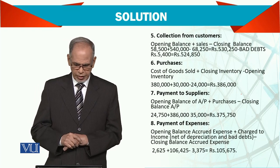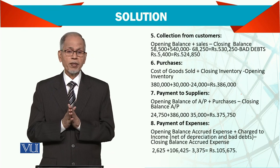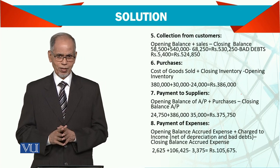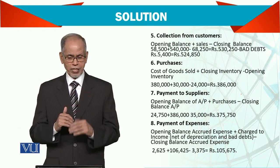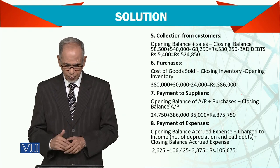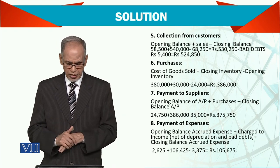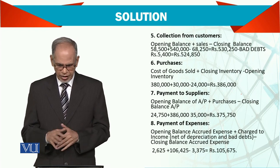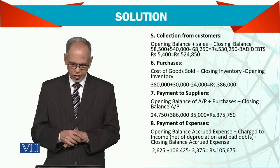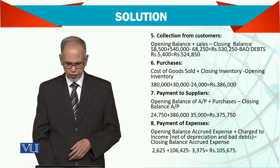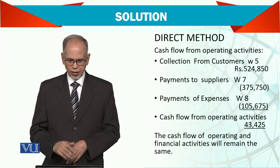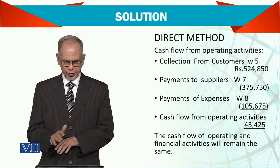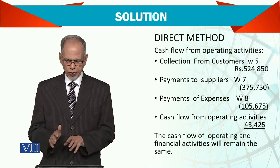For operating expenses — don't forget, these operating expenses do not include depreciation. Depreciation is a separate item altogether and will be adjusted separately. In the direct method, we don't have depreciation here. Instead, we use: opening accrued expenses plus charge to income minus closing balance of accrued expenses, to come up with the payment for expenses. Direct method covers: collections, payments to supplier, payment for expenses, and cash from operating activity.